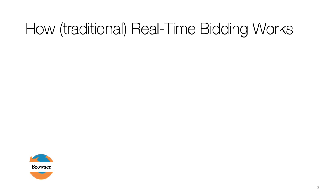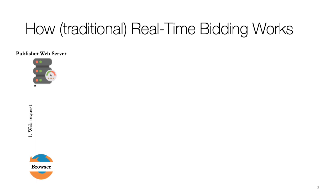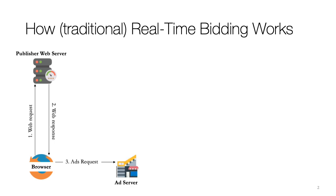Let's start by understanding how the traditional real-time bidding process works. It starts in a predictable manner. The browser sends a web request to the publisher's ad server. A publisher is a website that uses third-party online advertising. So Wikipedia and government websites are not publishers. Google and Facebook are not publishers, but New York Times and Washington Post, for example, are publishers. The publisher's web server sends back a response and based on that response, the browser will contact an ad server.